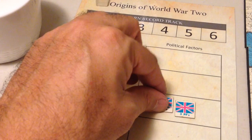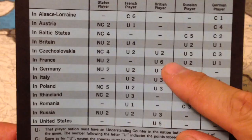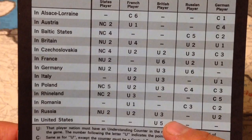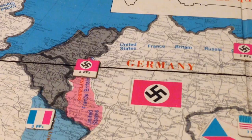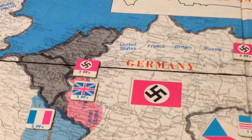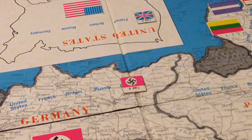The last chit is Britain, which has eight political factors. The British receive victory points solely through understanding markers in different areas. They earn six for France, five for the United States, and nothing for the Rhineland. So Britain places three political factors in the Rhineland to prevent Germany gaining easy control there, and its remaining five go to the United States to establish an understanding.